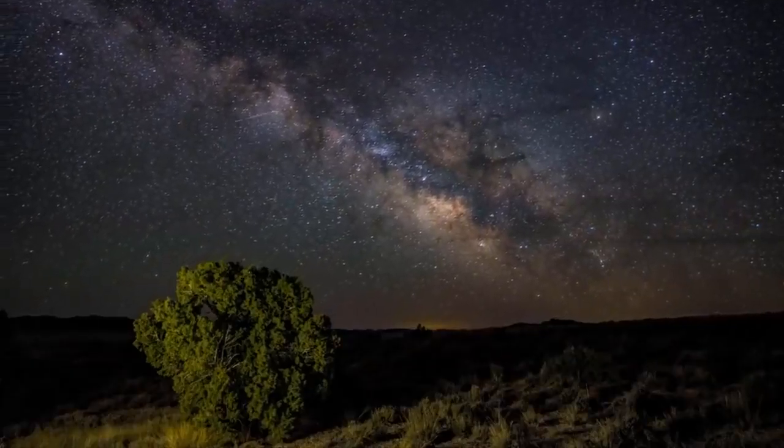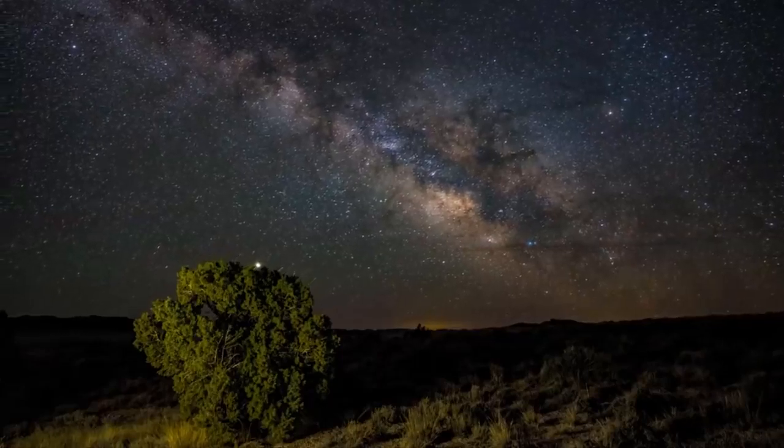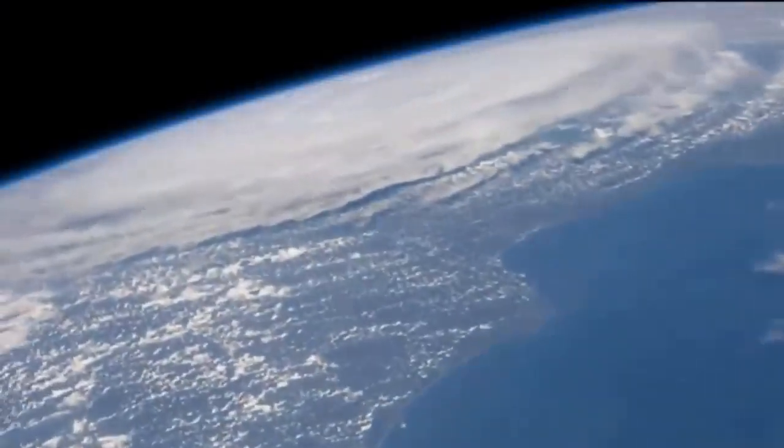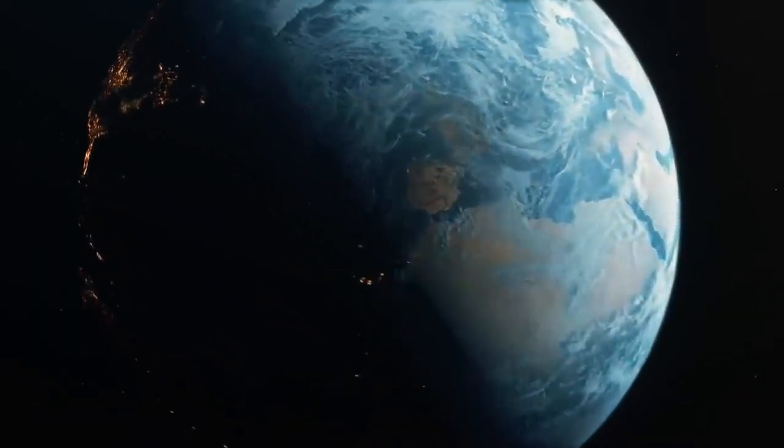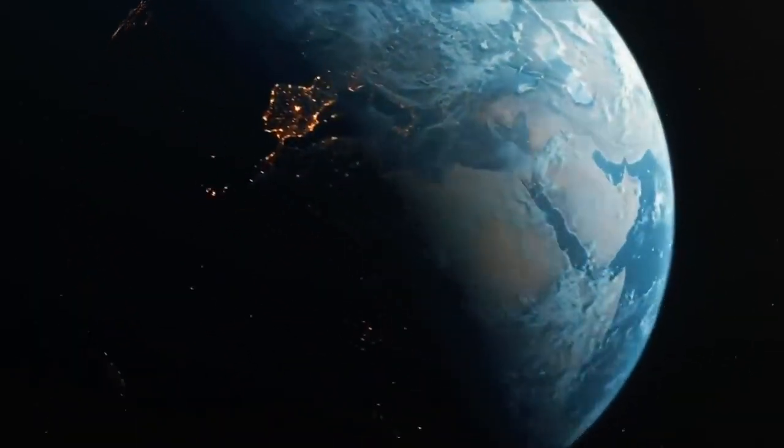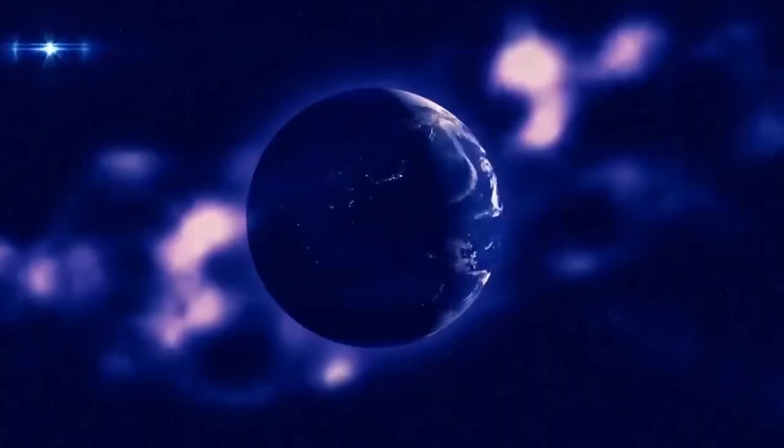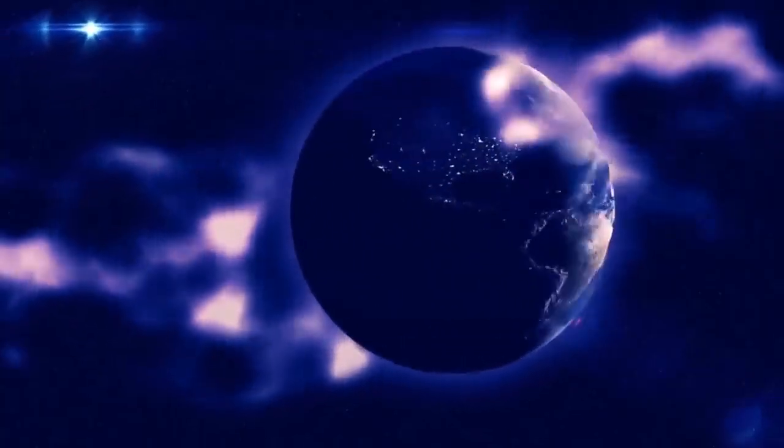The planet moves slower when it is at aphelion and faster when it is at perihelion. The reason the Earth, or any planet, has seasons is that Earth is tilted 23 and a half degrees on its axis.